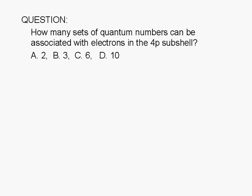How many sets of quantum numbers can be associated with electrons in the 4P subshell? A2, B3, C6, or D10.